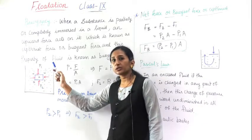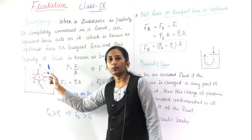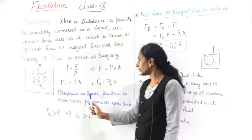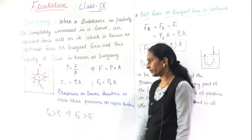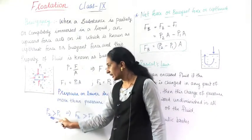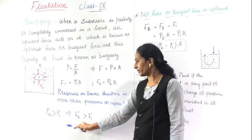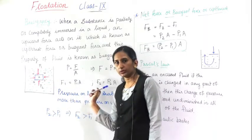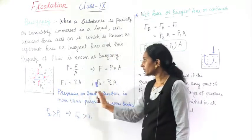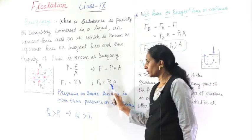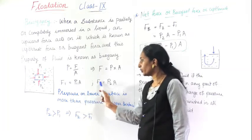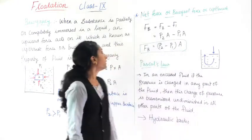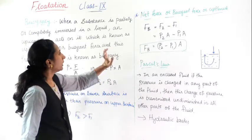Now the condition is: the pressure on the lower surface is greater than the pressure applied from the upper surface. If you are pushing downwards, it pushes back upward, so the lower surface has more pressure than the upper surface. Therefore P2, which is the lower surface pressure, is greater than P1, the upper surface pressure. Since area A is constant, it follows that F2 is also greater than F1.